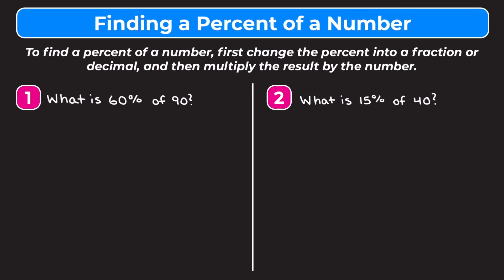In this video we're learning how to find a percent of a number using an equation. The top of our screen says to find a percent of a number, first change the percent into a fraction or a decimal, and then multiply the result by the number. We cannot put percents into equations, so before we write our equation we have to turn our percent into a fraction or decimal — you can only put fractions and decimals.